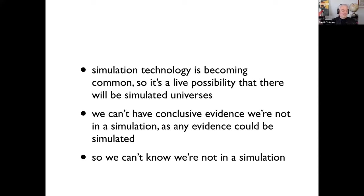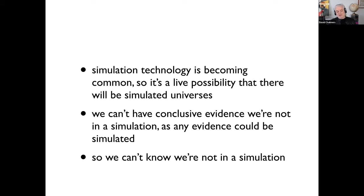This Cartesian possibility is actually becoming a live possibility. I argue that we cannot ever have conclusive evidence that we're not in a simulation, roughly because any evidence could itself be simulated. So the simulation hypothesis is in principle indistinguishable from the physical reality hypothesis, at least if we suppose a perfect simulation. That's how we get to the first main claim: we can't know we're not in a simulation.